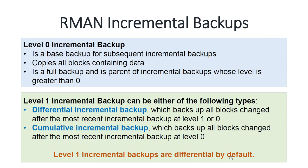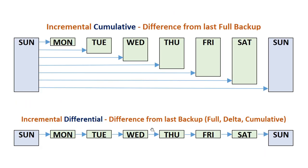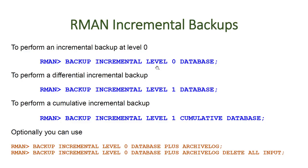Level 1 incremental backups are differential by default. To take a level 0 backup, run 'backup incremental level 0 database'. To take a differential backup, run 'backup incremental level 1 database' — without specifying the keyword 'cumulative', it is differential by default. To take a cumulative backup, you must use the keyword 'cumulative': 'backup incremental level 1 cumulative database'. You can also append 'plus archive log' or 'plus archive log delete all input' to any of these commands.